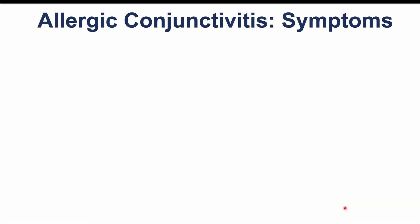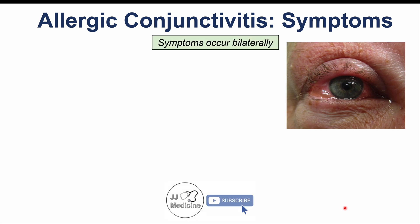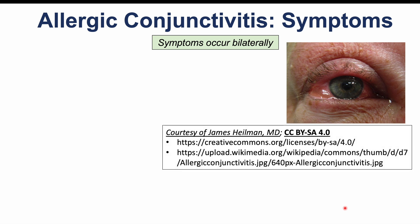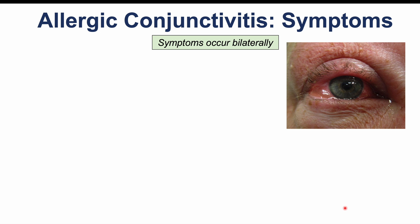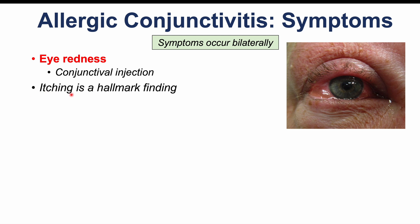Now let's discuss symptoms by type. Allergic conjunctivitis occurs bilaterally because it is a systemic allergic response — patients will have systemic signs and symptoms like sneezing and runny nose, affecting both eyes. There will be eye redness and conjunctival injection, where blood vessels are visible in the whites of the eye. The hallmark finding of allergic conjunctivitis is itching. Due to histamine release, it is very itchy, causing patients to scratch and rub their eyes.